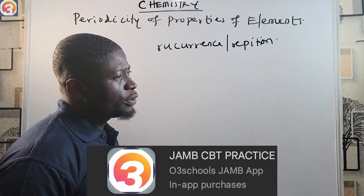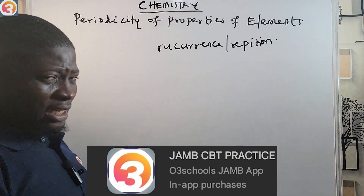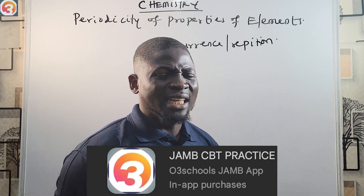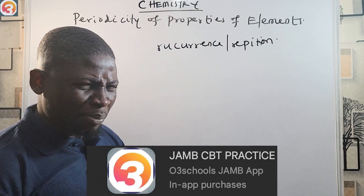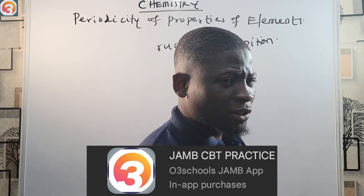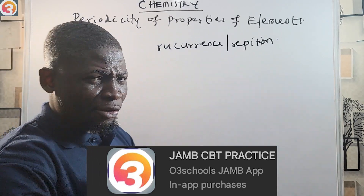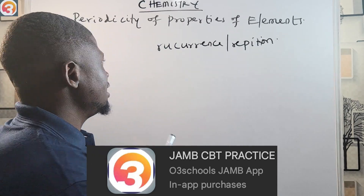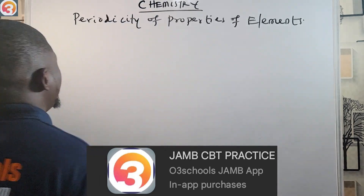Now let's go back to periodicity of properties of elements. Some elements show periodicity — they show recurrence and repetition at intervals. We are going to look at five properties today.